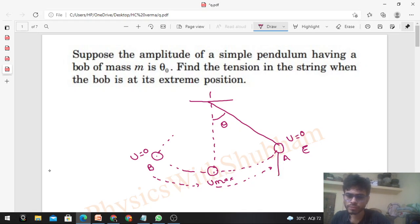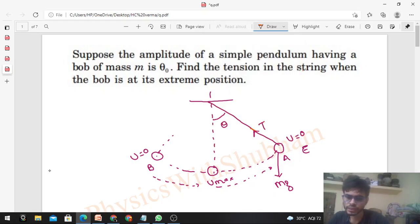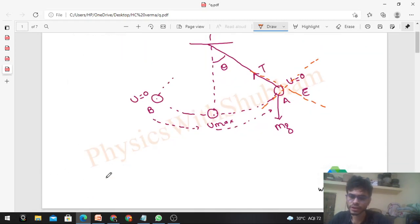So I have to put tension T in the radially inward direction and weight mg vertically downward, already in the radial direction.